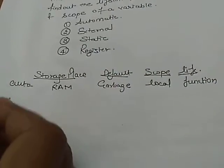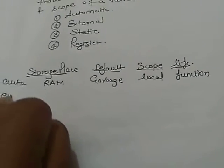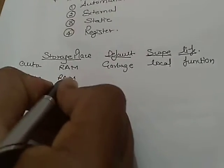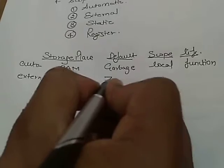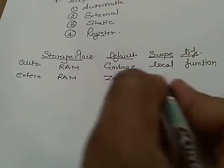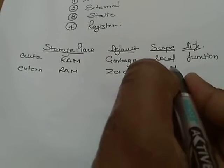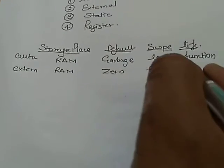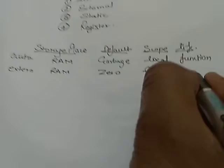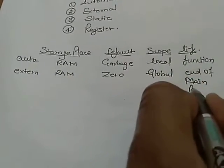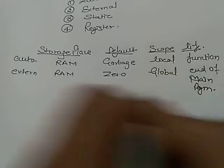Now, second one is external storage class. Its storage is main memory. Default value is zero. Its scope is global and its lifetime is till the end of main program, end of main program.